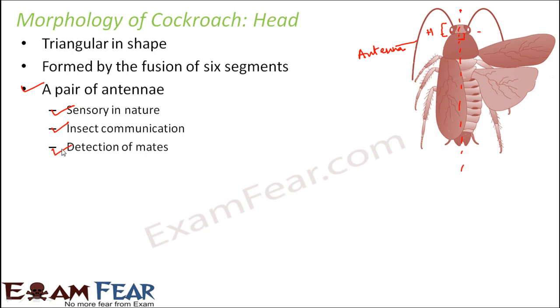The antennae can detect things and also help in detection of mates. For example, during reproduction, when a cockroach is searching for a mate, the antennae help to communicate. So antennae are basically used for communication.